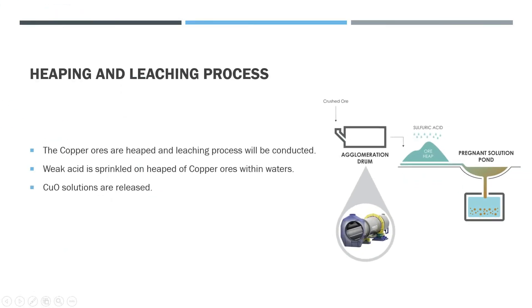For heap and leaching process, the copper ores will be heaped and leaching process will be conducted, which is weak acid will be sprinkled on the top of it, and water will be added. As you can see at the right side, the diagram shows that the flow of the process, which is from the agglomeration drum to the heap and leaching process until the pregnant solution. After the heating and leaching process, copper oxide solutions can be released.